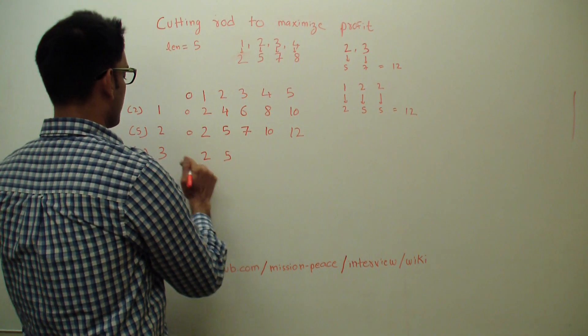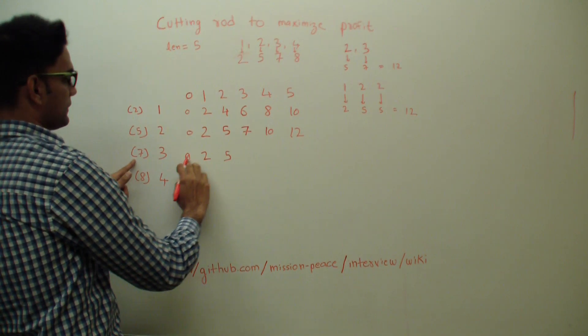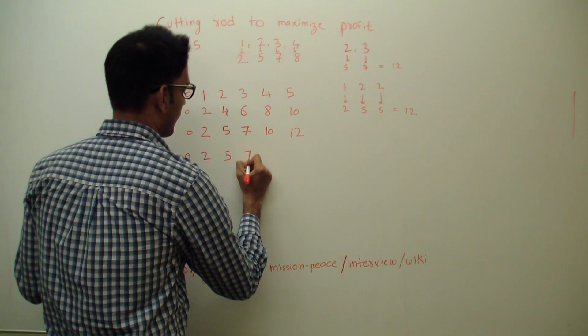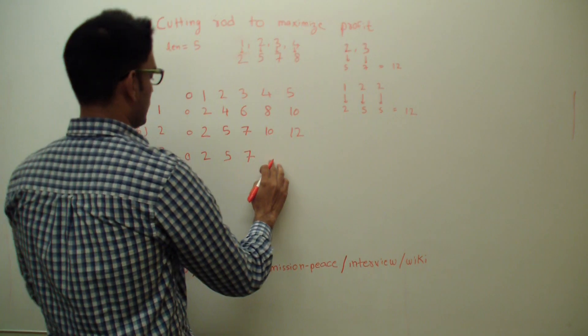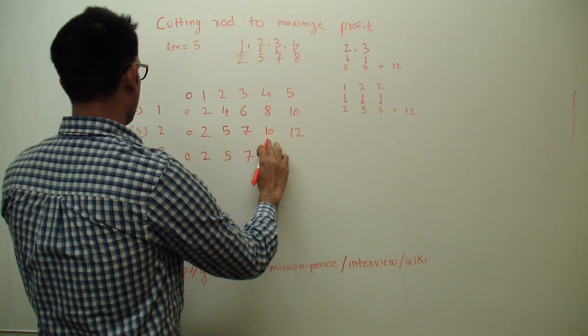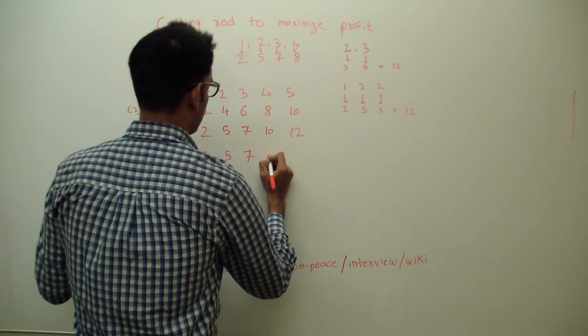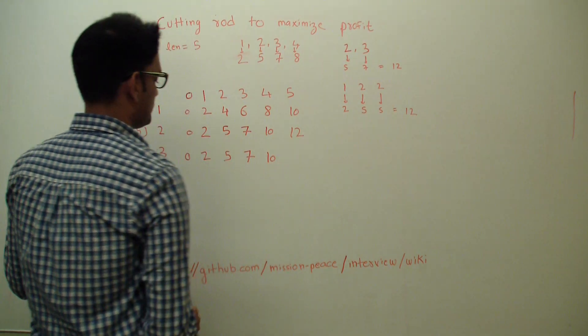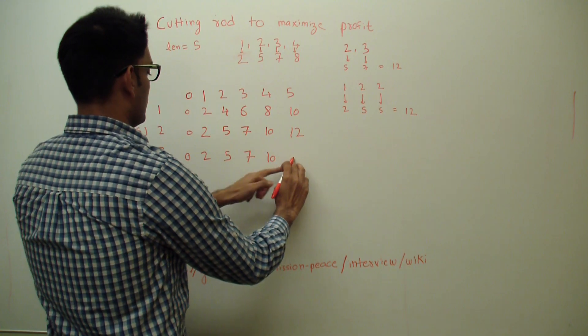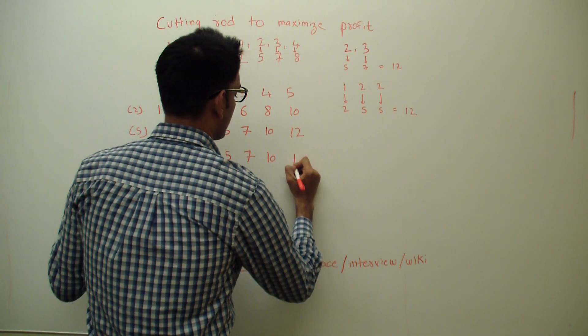Or we can go three steps back from here and reach here, so zero plus seven, so maximum of seven or seven, so it doesn't matter, so seven. Here maximum of two plus seven, nine or ten, so we'll take ten from top. Here maximum of five plus seven, twelve or twelve, so it's same, so twelve.